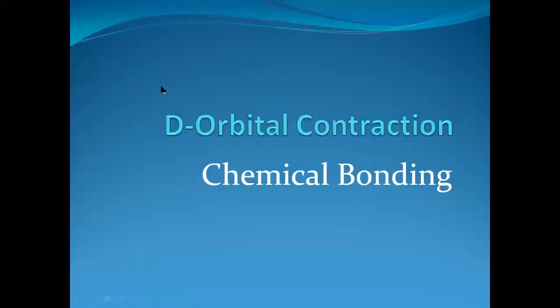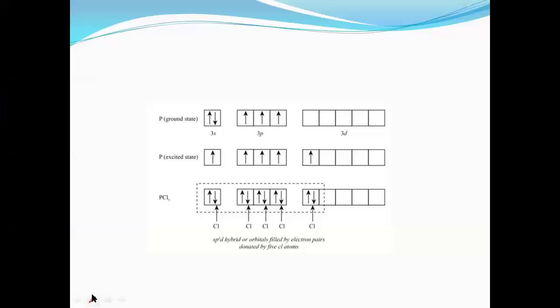In this video, I'm going to discuss d-orbital contraction from chemical bonding. I'll deal with why PCl5 exists and PH5 does not exist, based on this d-orbital contraction.